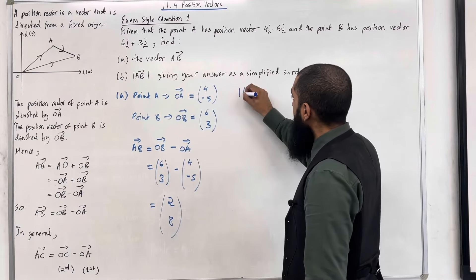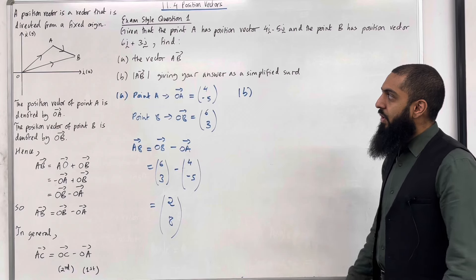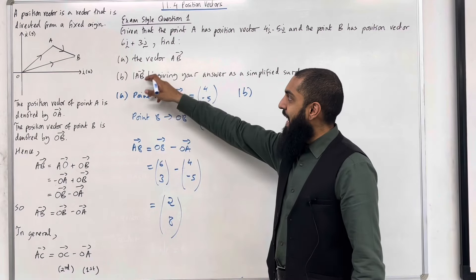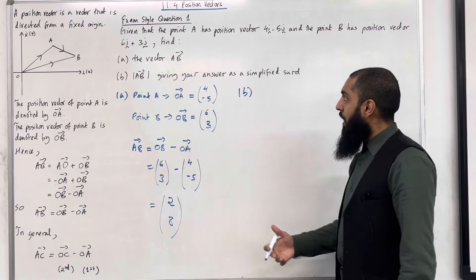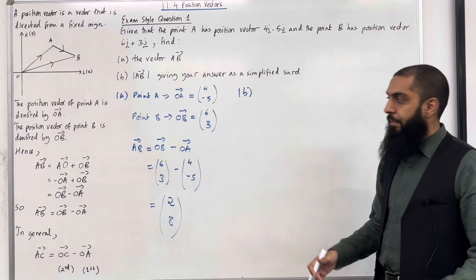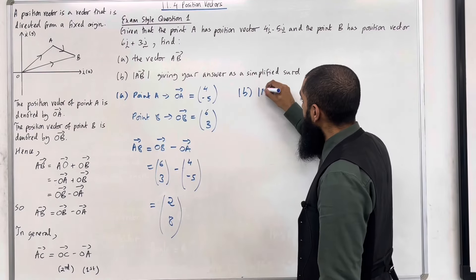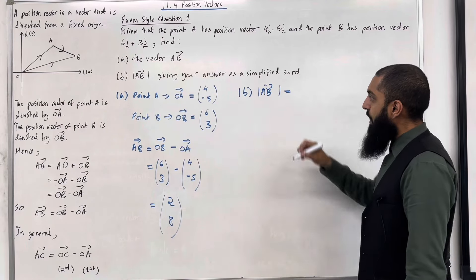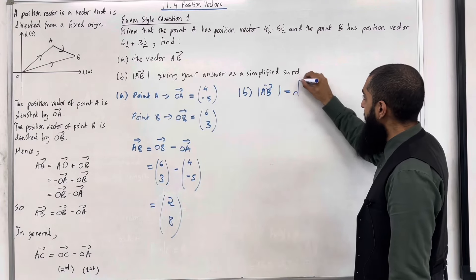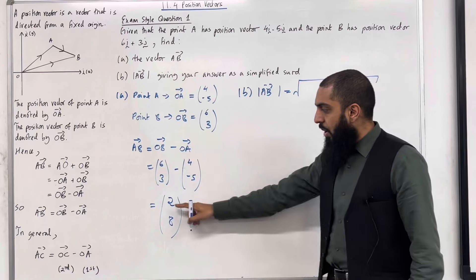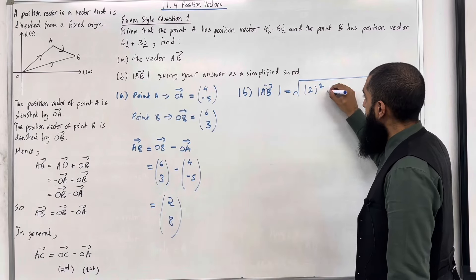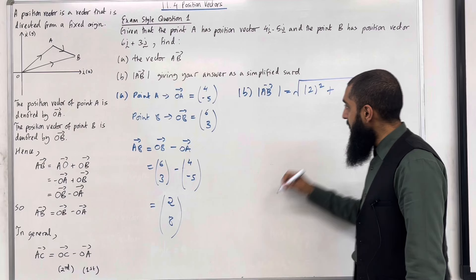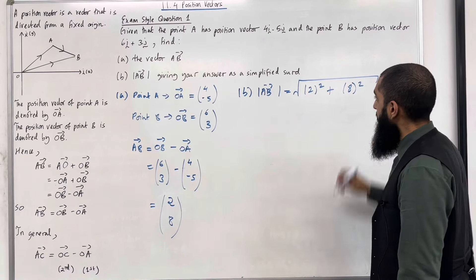So in part B, what is required? We want to find the magnitude of the vector A to B, giving your answer as a simplified surd. So now we are after the magnitude of A to B. So to work out the magnitude of A to B, we take square root, the I component, which is 2, you square it, plus the J component, which is 8, and you square it.